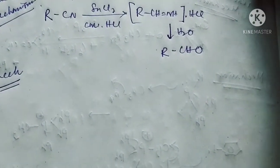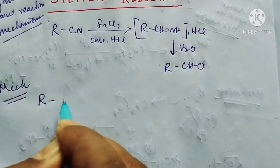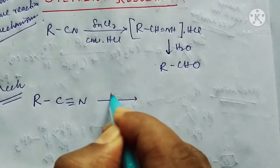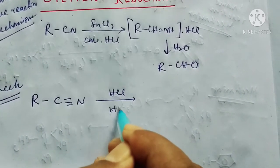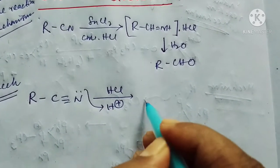First, you see this cyanide in presence of hydrochloric acid. There is always presence of H+ ion and this nitrogen takes this H+ ion.